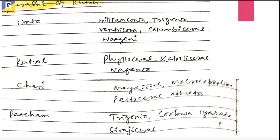Williamsonia is the name of a Gondwana flora plant found in the Umia succession. Different animal fossils such as Trigonia ventricosa and Columbiceras are also found in Umia. Next, the Katrol Formation holds fossils such as Phylloceras and Katroliceras. The Chari Formation holds fossils such as Myites, Macrocephalites, and Peltoceras athleta — this last one is a typical fossil for the Chari Formation you have to remember. The oldest Pacham Formation holds Trigonia, Corbula, and Sivajiceras. These fossil names are typical for the Jurassic succession in the Kutch region.